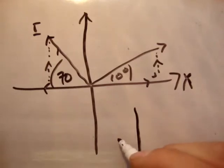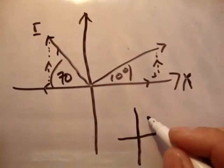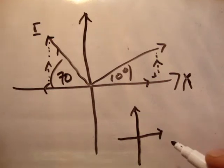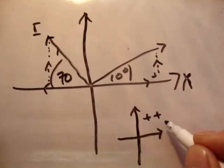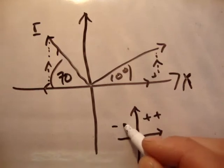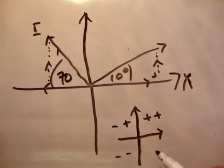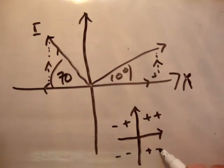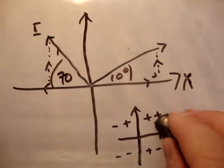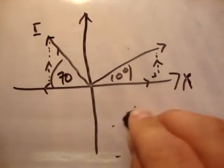How do you know the signs? If positive j is in that direction and positive i in that direction, both in this first quadrant are plus. The i has changed sign, so it's minus. Both have changed sign. And this time, j has changed sign and i is positive. So for vector r, it's negative i but positive j.